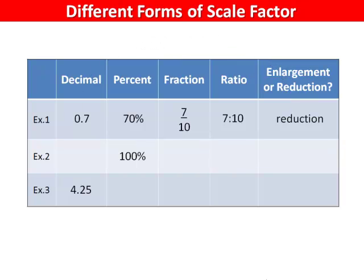In example two, the scale percentage is one hundred. This means that the decimal value is one. The fraction would be one over one, reducing to just one, and the ratio would be one to one. In this case, nothing has happened to the image, so there's no change.